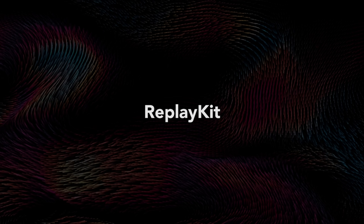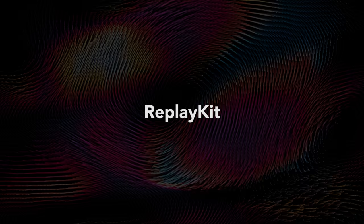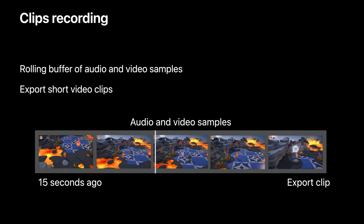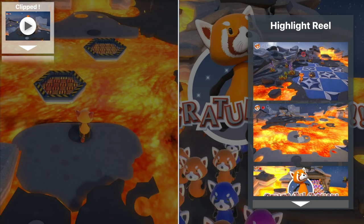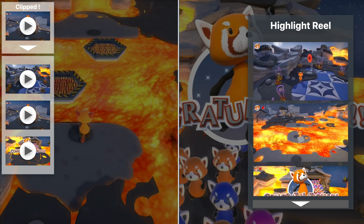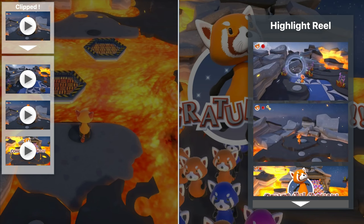In iOS 15, iPadOS 15, and macOS Monterey, ReplayKit has a great new update: in-app clip recordings. You can now screen record a rolling buffer when playing a game — in other words, immediately grab the last 15 seconds and save it as a clip. Not only this, there is also an API to automatically trigger captures for highlights in developers' games.